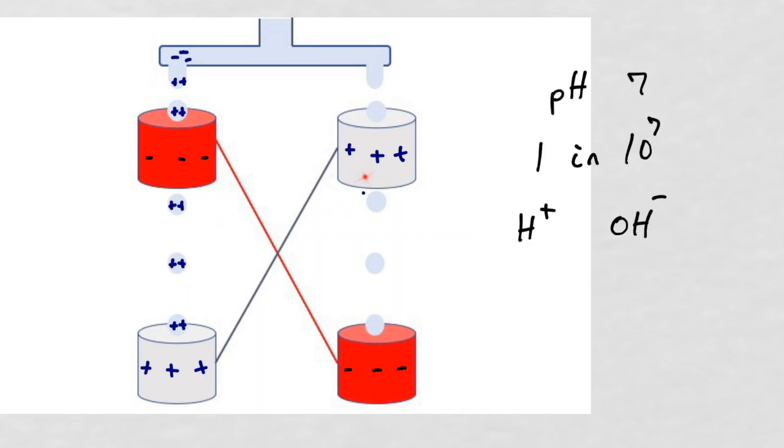So these positive charges on the upper right paint can are going to repel the H plus ions and attract the OH minus ions. So these water drops that fall on the right hand side are negatively charged, charging up the lower right paint can more negatively, which also charges up the upper left can negatively.